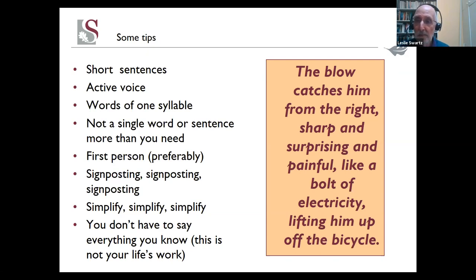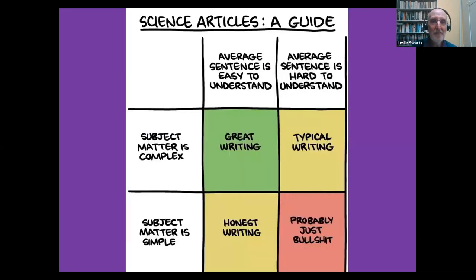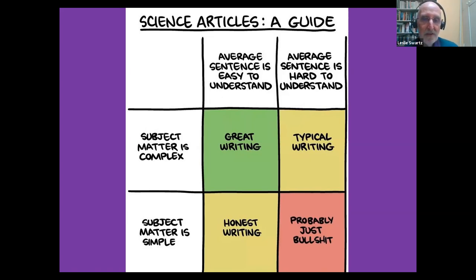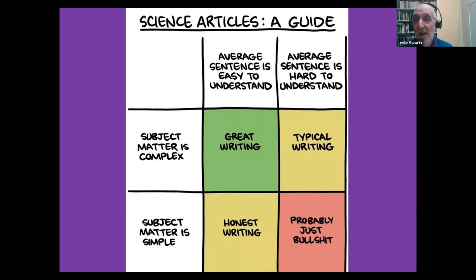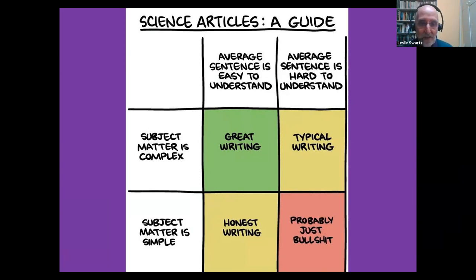Looking at the quotation on the right: 'The blow catches him from the right, sharp and surprising and painful, like a bolt of electricity, lifting him up off the bicycle.' This is the first line of a novel. It's very simple, with just a couple of unavoidable big words. When I read that, like millions of other readers, I want to know what happened next. This is writing by a Nobel Prize winner — J.M. Coetzee. It's his novel Slow Man, which is about disability. What do we want? People writing about complicated things where the average sentence is easy to understand — that's great writing.